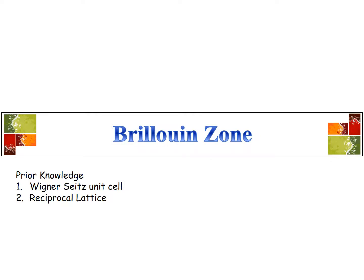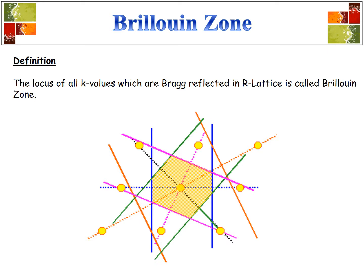Let us discuss about Brillouin zones. The prior knowledge you should have while learning about Brillouin zones — we are going to see that soon, as well as the concepts about reciprocal lattice. Definition: the locus of all K values which are Bragg reflected in reciprocal lattice is called a Brillouin zone. The definition may look quite deep, but its significance is quite simple.